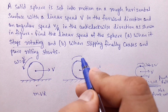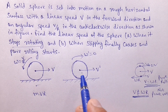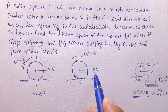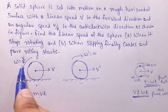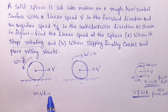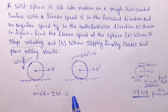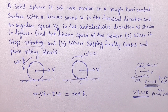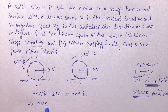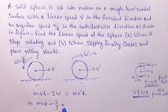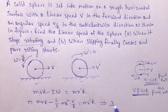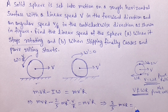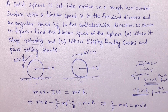When it stops rotating, omega becomes zero (omega' = 0). So only the linear velocity of the center of mass, v', remains. We apply angular momentum conservation for both situations. Angular momentum: m·v·r (for v), minus I·omega (since it is in the reverse direction), so it is minus I·omega. This equals m·v'·r. So: m·v·r minus (2/5)·m·r²·(v/r) equals m·v'·r.